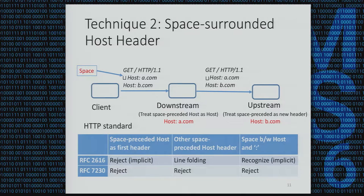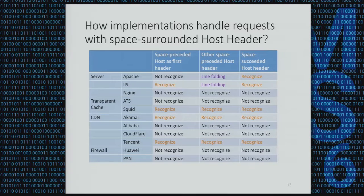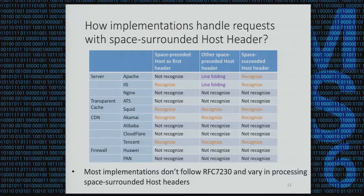The old HTTP standard states that a whitespace-preceded host must be processed as a fold line with the previous header. If the whitespace-preceded host is the first header, it implicitly requires rejection. For space between host and colon, it implicitly states that systems could recognize it. The latest standard clearly states that systems should reject whitespace around host headers. From the implementation table, we can see that implementations vary — some recognize whitespace and some don't, and most don't follow the latest standard.